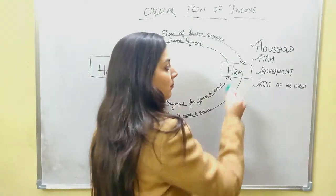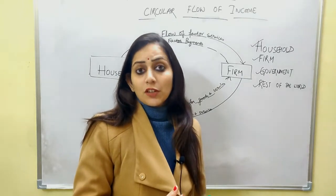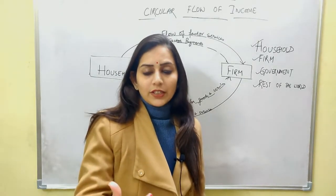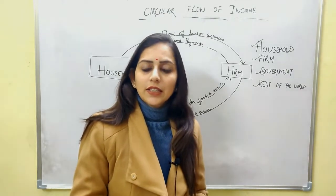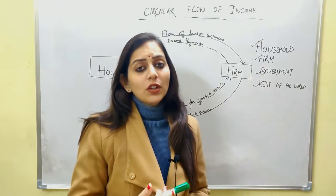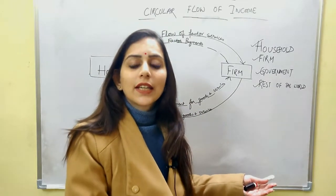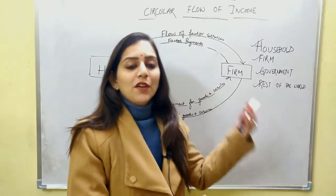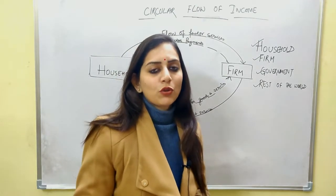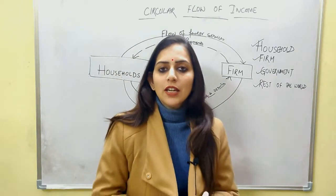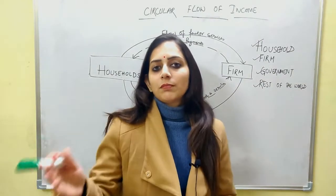The second sector is the firm. The firm is that sector which hires factor services from the household. It gathers those factor services together and undertakes production activity. From that production activity, the income generated is retained as profit, and at the same time, factor payments are also made to the households. If you understand this basic relation between household and firm — that the household provides its services to the firm and in return the firm makes payment — you have the core idea.